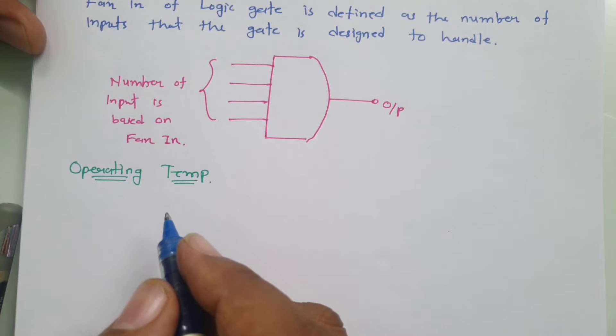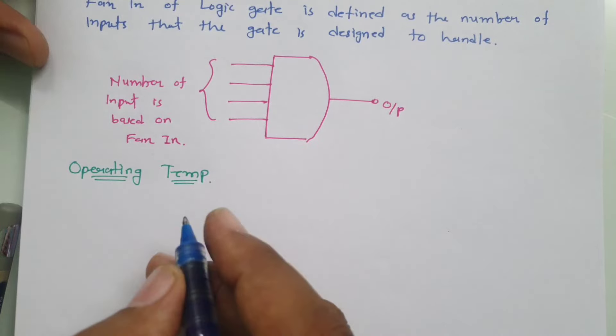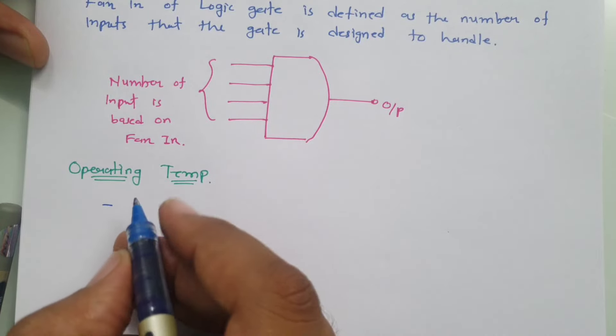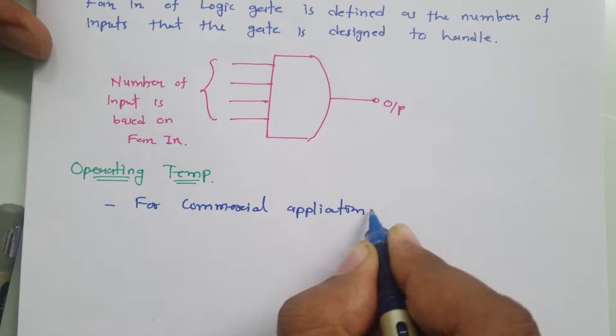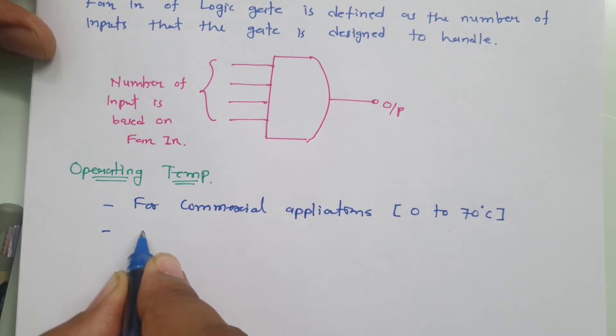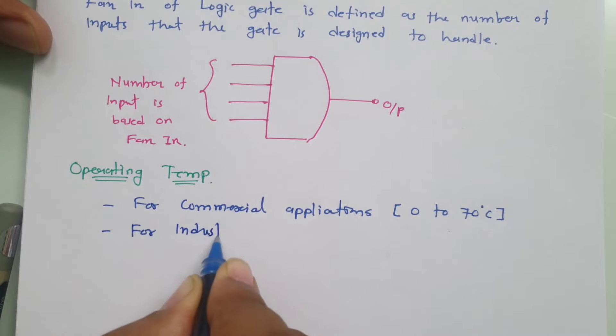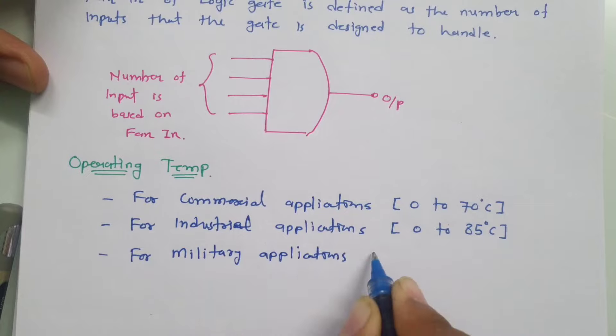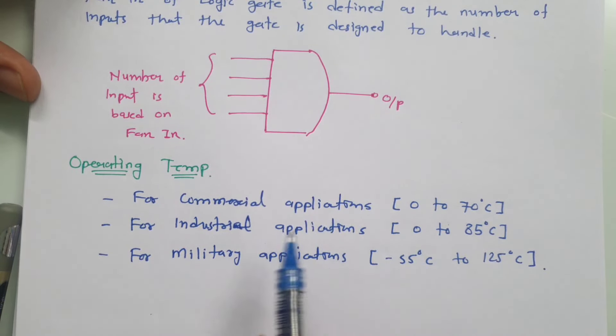Let me discuss all those temperature ranges one by one. For commercial applications, temperature range is there from 0 to 70 degree Celsius. For industrial applications, temperature range is there from 0 to 85 degree Celsius. And for military applications, temperature is ranging from minus 55 degree Celsius to 125 degree Celsius. So these are the operating temperatures for different applications.